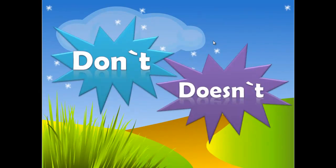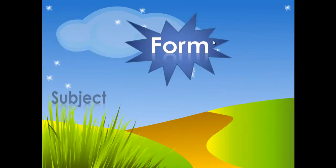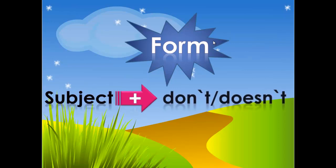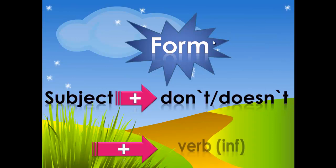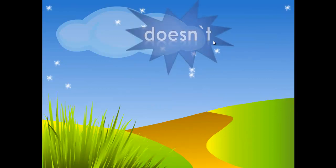We can use 'don't' or 'doesn't'. The form is: subject + don't or doesn't + verb infinitive. Subject means he, she, it, we, they, you, I. We put 'don't' or 'doesn't' after the subject, and then the verb in infinitive form without 's'.